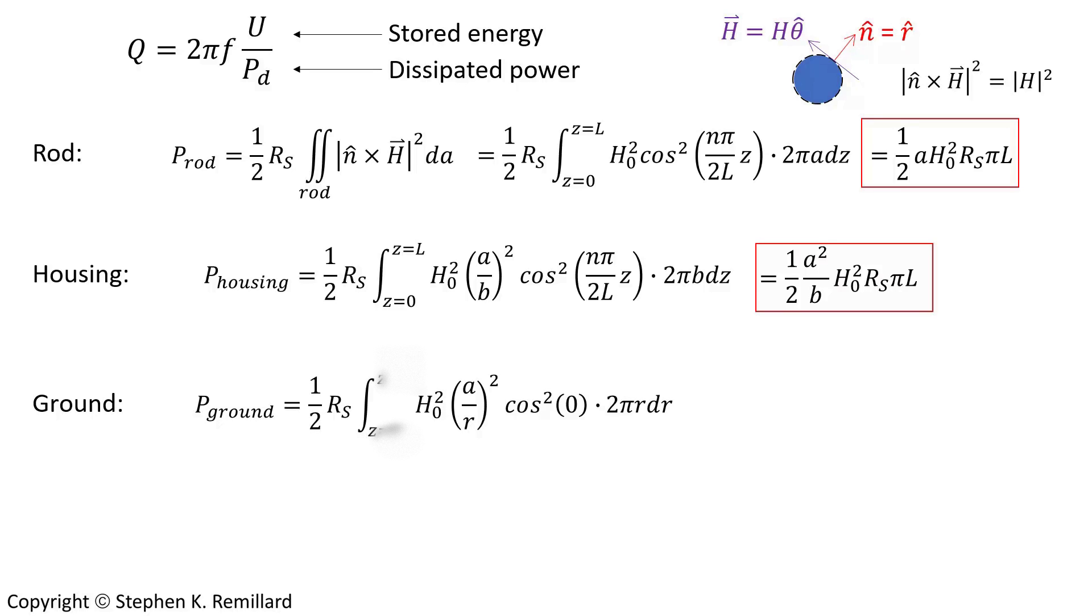Finding the power dissipated on the ground plane is important. I'm not going to worry about the power dissipated on the opposite flat wall, but the flat wall that the rod is attached to is very important. One half Rs I squared for that now involves an integration over r. We're at z equals zero, so it's just cosine squared of zero. That makes it easy. Solve that integral, and you do have this logarithm.